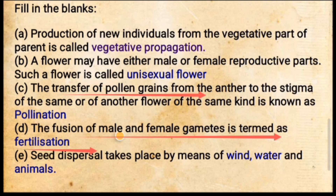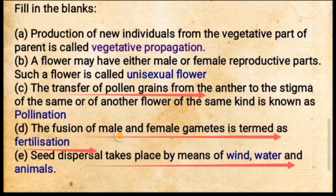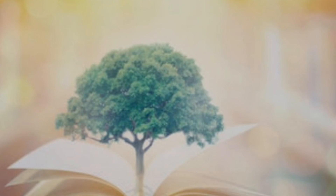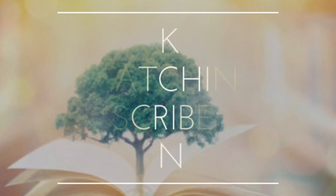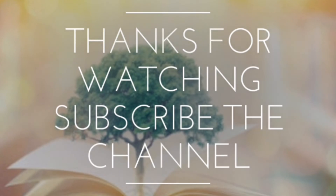The last one: seed dispersal takes place by means of dash, dash and dash. Seed dispersal can be by wind, by water, or by animals — so there are three blanks to fill: wind, water, and animals. Thanks for watching — please like, share and subscribe the channel, Learn and Grow Better.